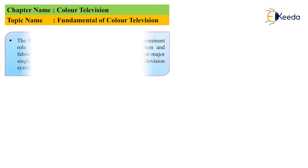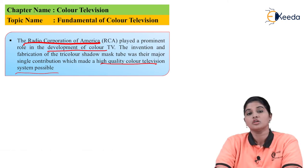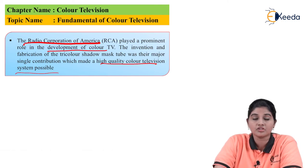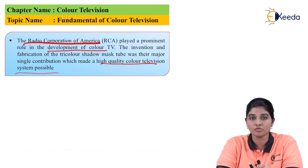The Radio Corporation of America (RCA) is considered an important body that played a prominent role in the development of color television. The invention and fabrication of the tricolor shadow mask tube was their major invention, and because of that it is possible to produce high quality color television systems in today's era. So these are the fundamentals of color television, which include the necessary requirements for color television — it is important to capture and present the color information in the picture.